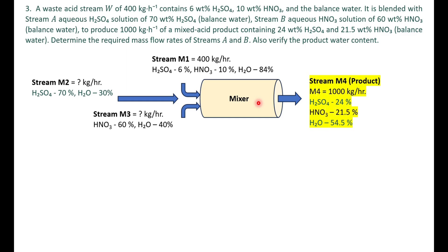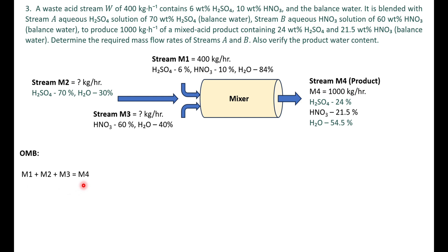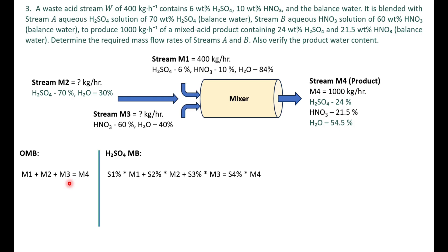We will solve the overall mass balance, solute balance, and water balance equations. Since there are two solutes — sulfuric acid and nitric acid — we will have two solute balance equations. For the overall mass balance, there are three inlet streams on the left-hand side and one outlet stream on the right: m1 + m2 + m3 = m4.